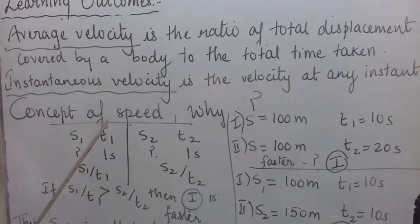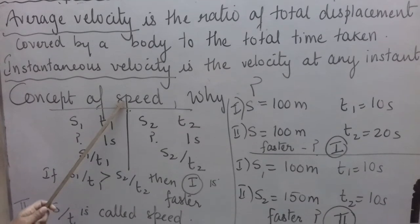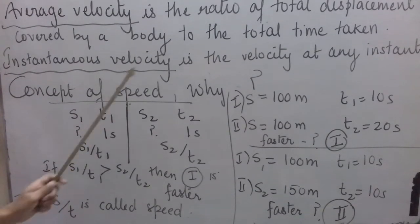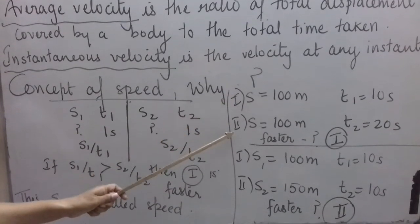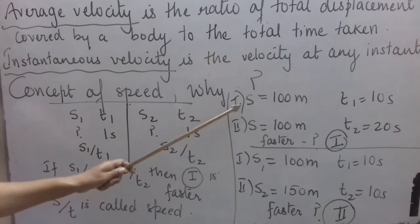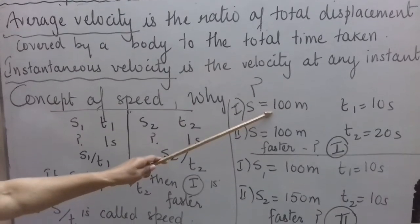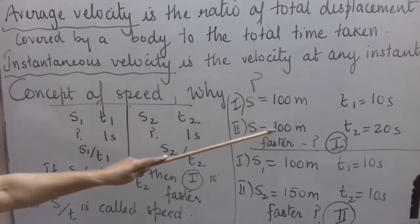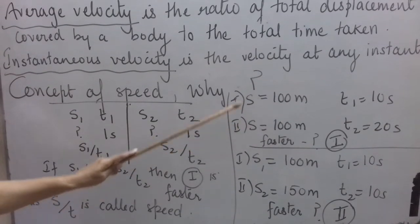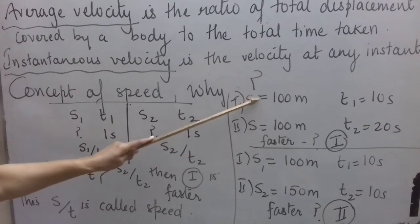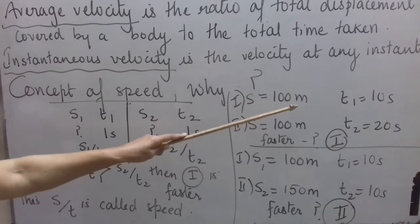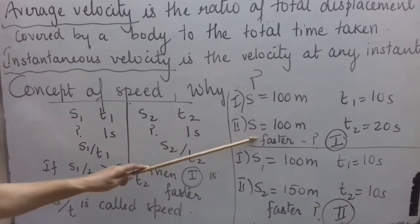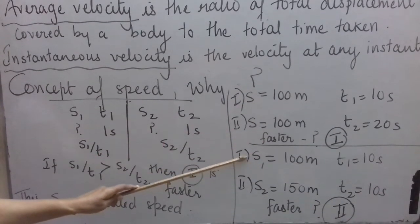Now let us see why the concept of speed was required. Speed tells us how fast or how slow a body is moving. Consider a 100-meter race with two participants: the first person takes 10 seconds to complete the race and the second person takes 20 seconds. The distance is the same, so we ask who is faster — the first person, who took less time, is faster.